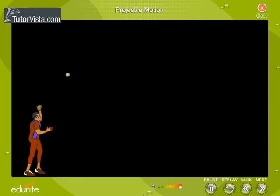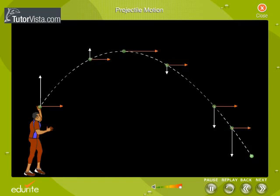The velocity of the projectile varies from point to point. At each point, the velocity has components in the horizontal and vertical directions.